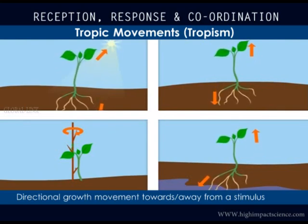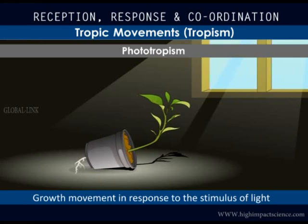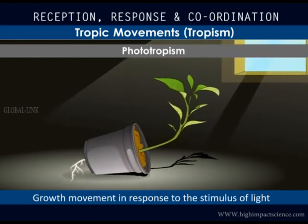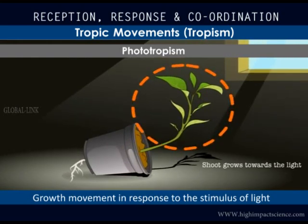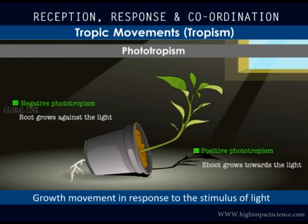Directional movements or growth towards or away from a stimulus are called tropic movements. Tropic movements towards a stimulus are termed positive, while tropic movements away from a stimulus are termed negative. Take for example this potted plant kept indoors — the stem has turned towards the window, that is towards the direction of light. Movement in plants due to light is termed phototropism. The plant's stem is growing towards light while the root is growing away from it. Therefore, shoots exhibit positive phototropism, which allows them to trap maximum sunlight for photosynthesis, while roots exhibit negative phototropism.